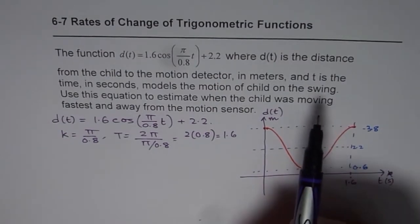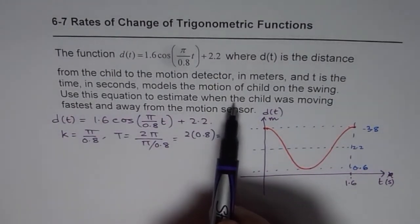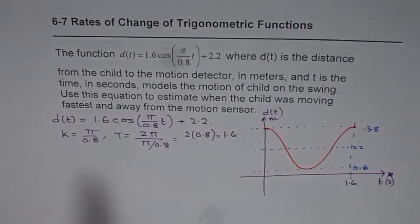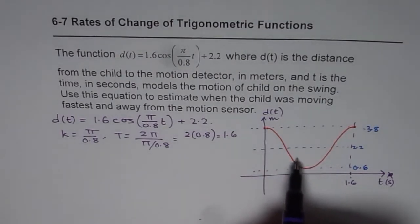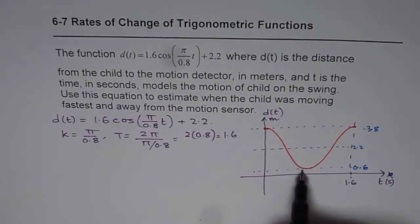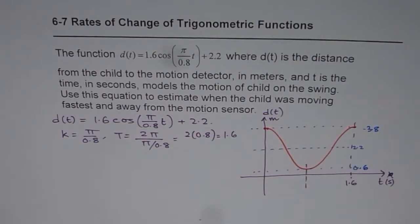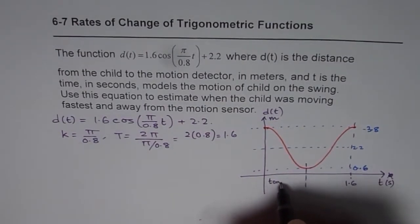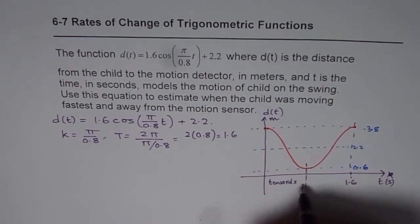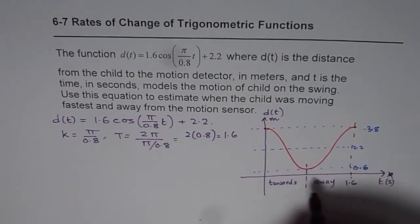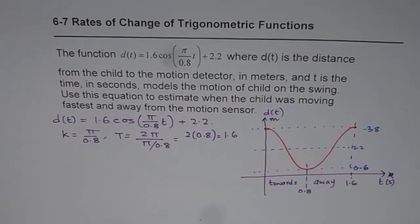Now the question is use this equation to estimate when the child was moving fastest and away from motion sensor. As you can see from here during this cycle the child is moving towards the motion sensor. Since the distance is decreasing, that part is away, so it is somewhere from here and half of 1.6 is 0.8, so it is somewhere after 0.8 and less than 1.6.